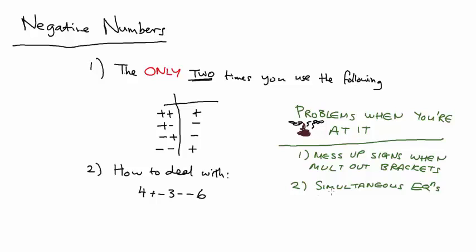So let's go into this section. Here are some signs that you don't know your negative numbers perfectly. If you ever multiply out brackets and you make what should have been, say, negative six into positive six or vice versa, then you're going to have a problem somewhere.